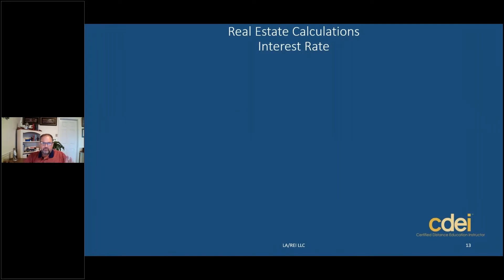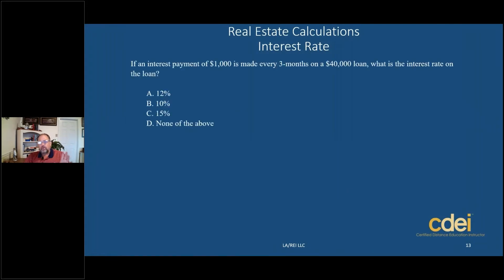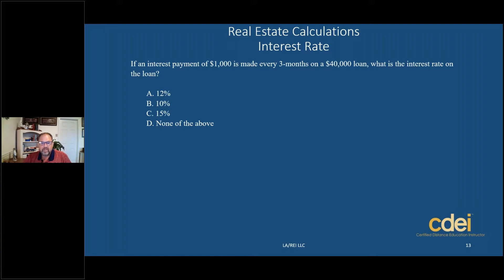We're going to talk about real estate interest rates. You may have a question similar to this: if an interest payment of $1,000 is made every three months on a $40,000 loan, what is the interest rate on the loan? Interest rate is expressed as a percent. The answer choices are 12%, 10%, 15%, and none of the above. An interest payment of $1,000 is made every three months on a $40,000 loan — they want to know what the interest rate is.